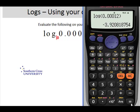This time, because we've got a number that's smaller than 1, we're going to get a negative value. So the answer is negative 3.9208.